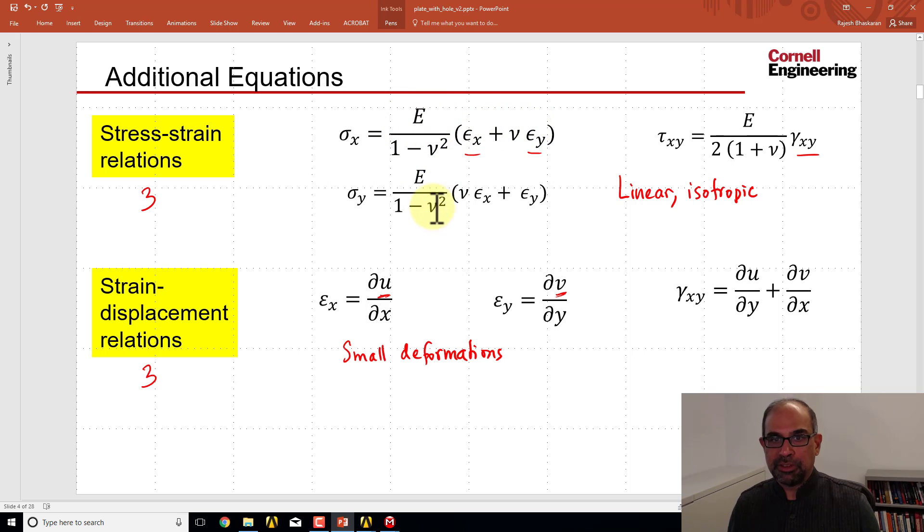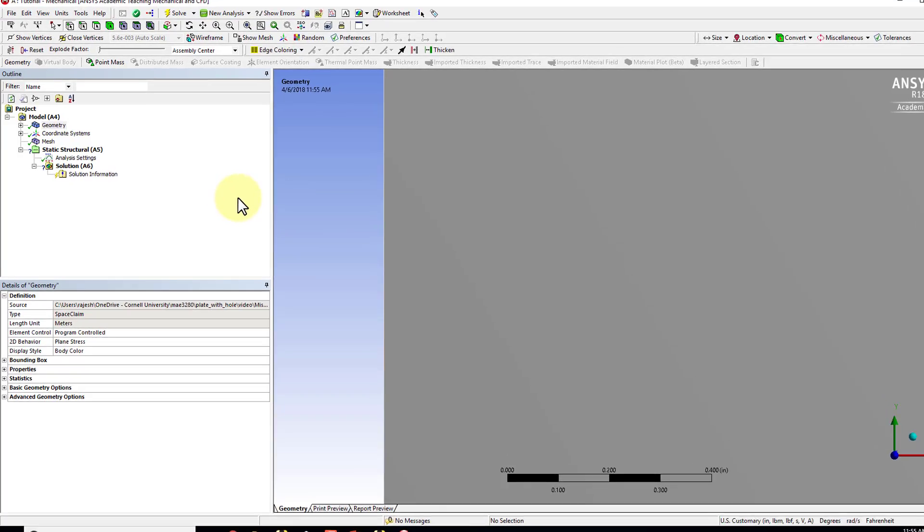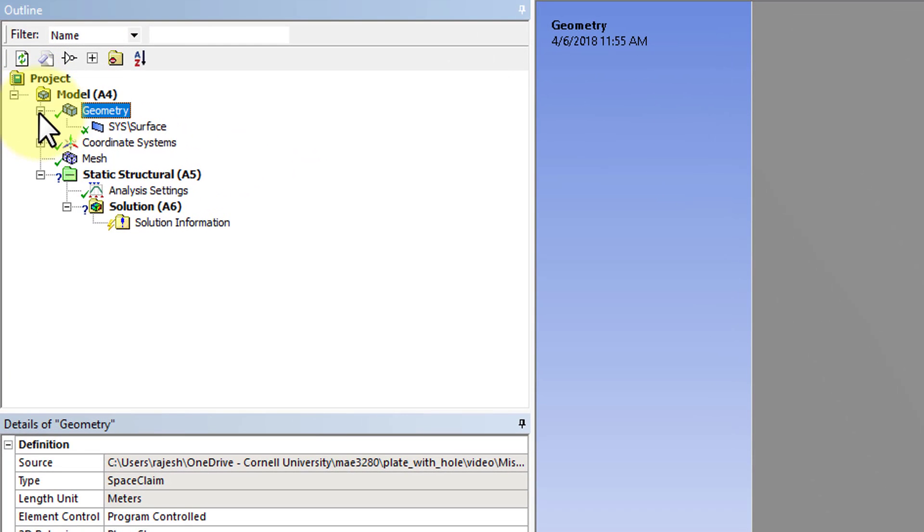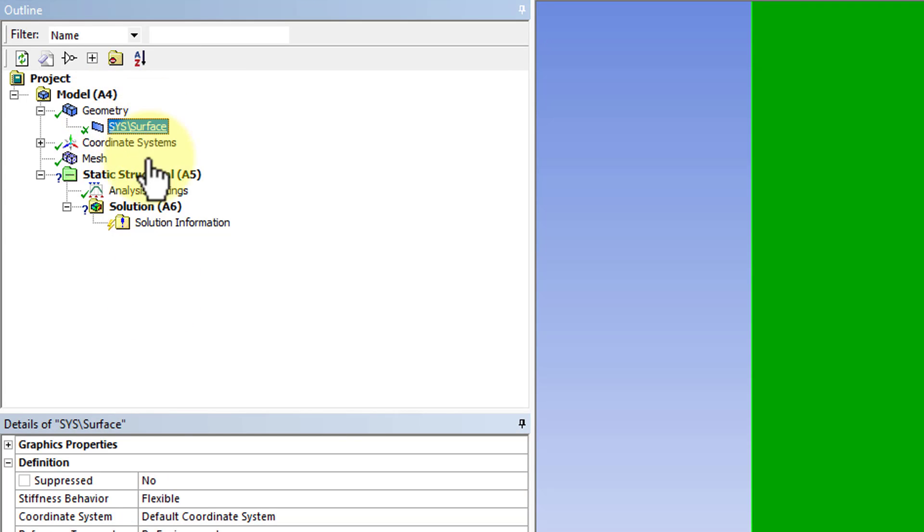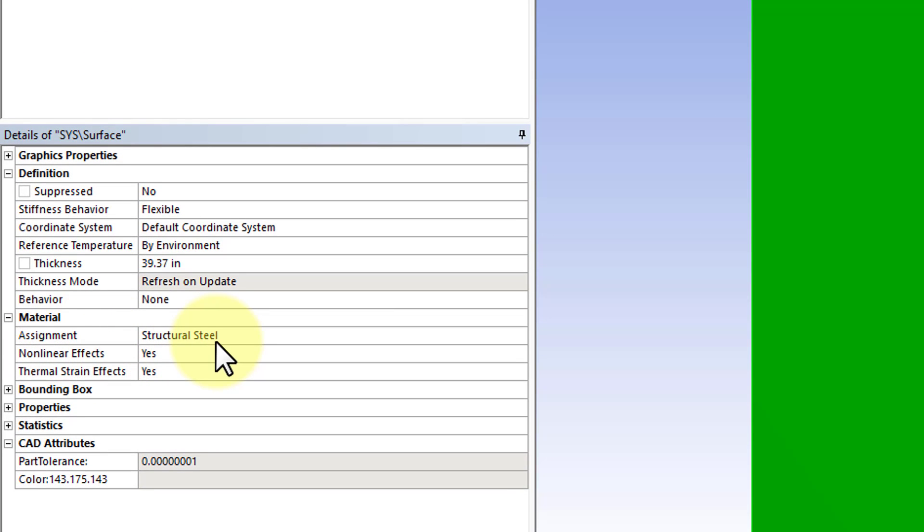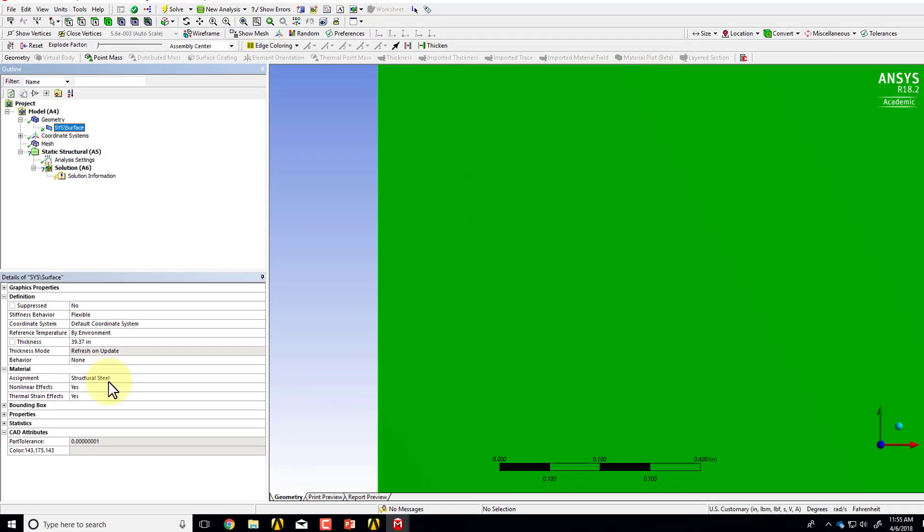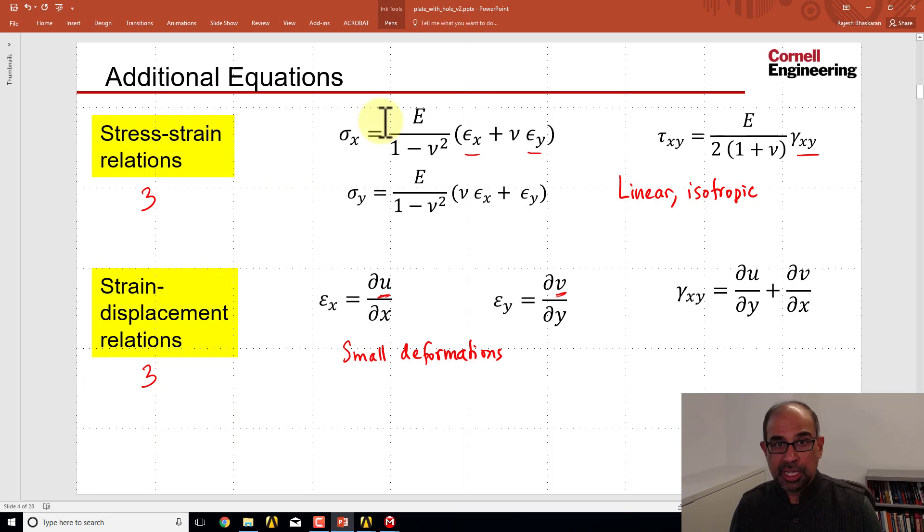But it doesn't have the right value of E and nu. And it gets that from the material assignments. If I go to under geometry to the surface, the assignment is structural steel. So we need to change that. So it has the right equations.